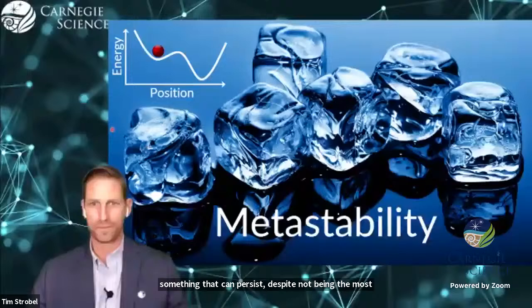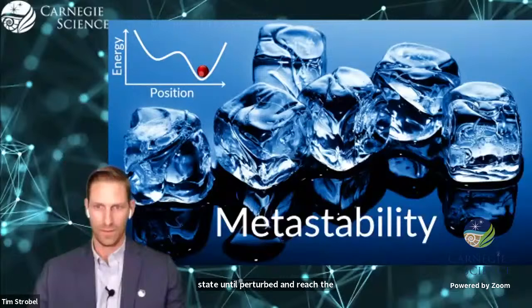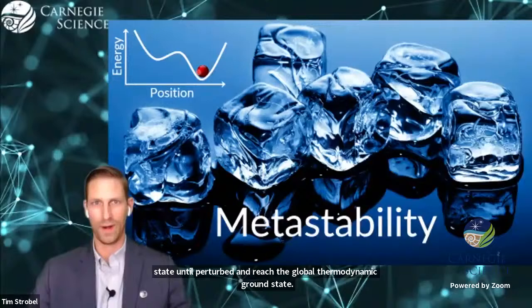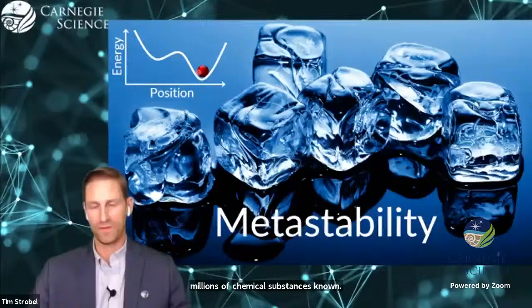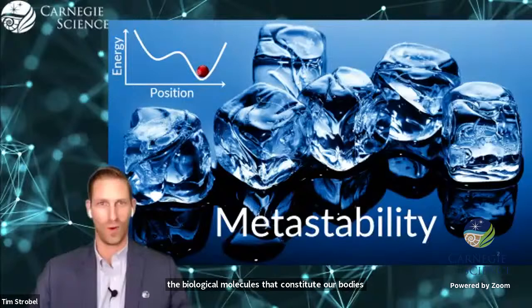A metastable substance is something that can persist despite not being the most stable or favorable state. For example, if I look at this ball sitting in this local energy minimum, it will persist within this state until perturbed and reach the global thermodynamic ground state. Of the approximately 100 million inorganic chemical compounds that are known, it is estimated that one half of them are metastable substances.